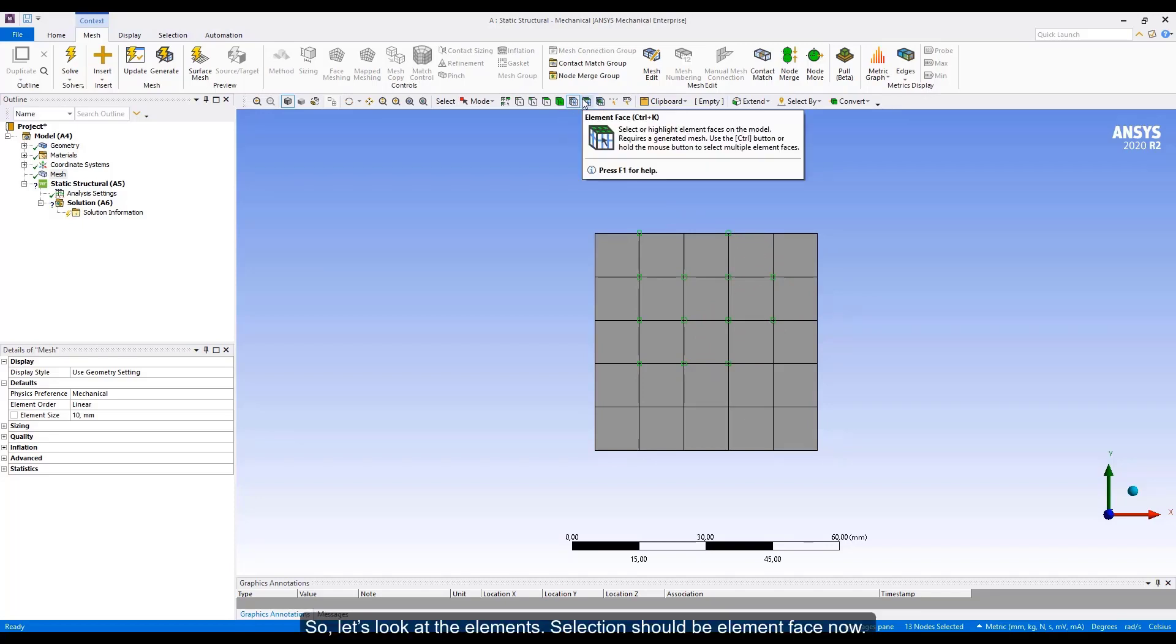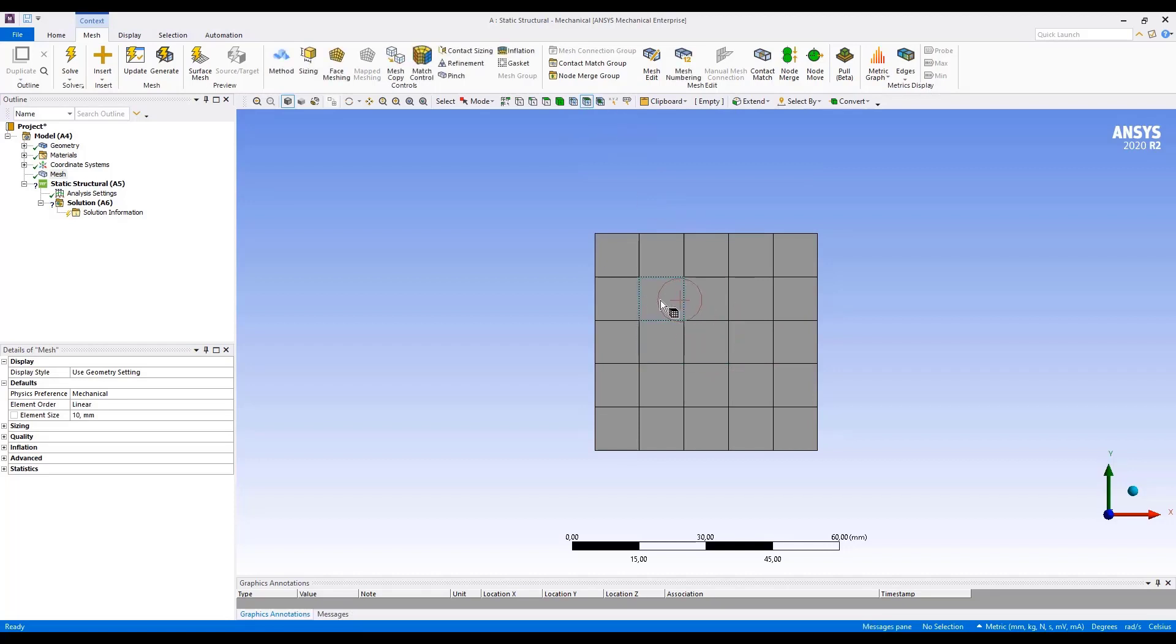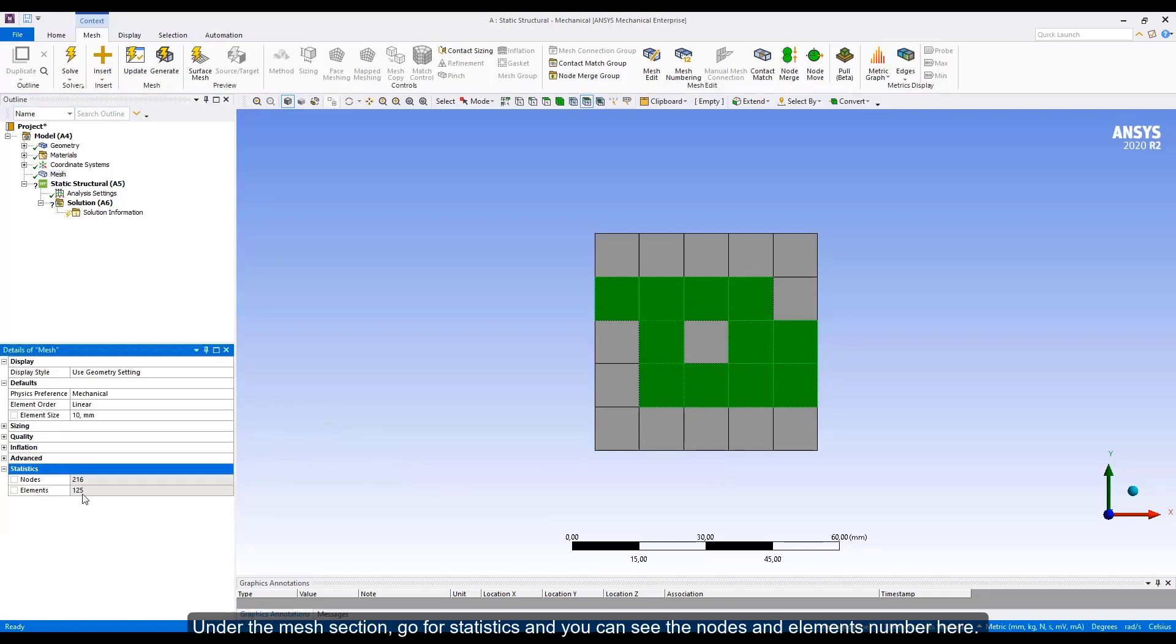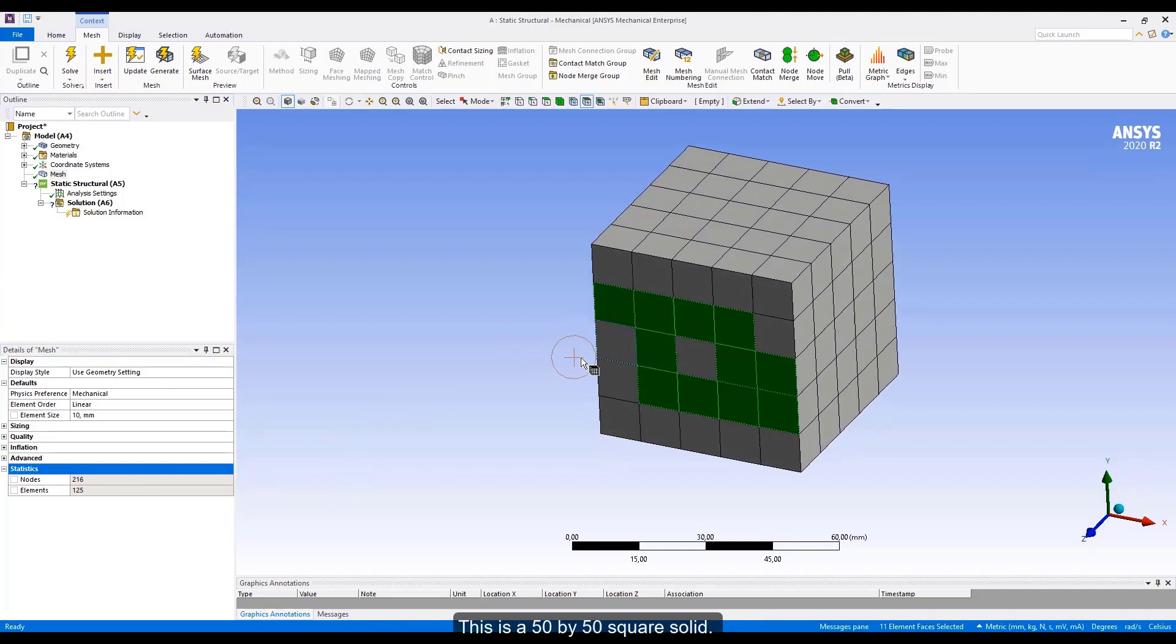So, let's look at the elements. Selection should be element face now. We are selecting element faces since we assume this is a 2D geometry. Now, let's check how many nodes we have. Under the mesh section, go for statistics and you can see the nodes and elements number here. We have 125 elements and 216 nodes. This is a 50 by 50 square solid.